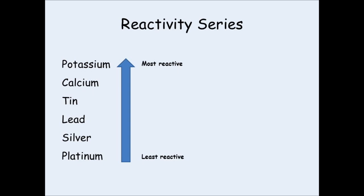Getting back to the chemistry — we talked about metals having different reactivities, and you can put them into what's called a reactivity series. This is where you rank the metals in terms of their reactivity. The most reactive metals go at the top, the least reactive go at the bottom, and it works its way from top to bottom in terms of how reactive they are.